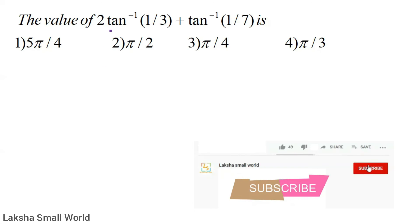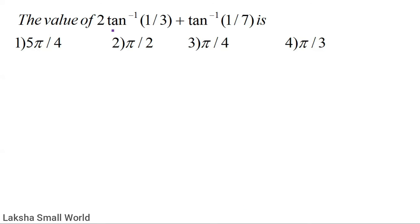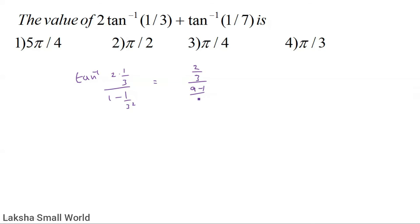Find the value of 2·tan⁻¹(1/3) + tan⁻¹(1/7). First solve 2·tan⁻¹(1/3) using the tan 2θ formula: tan⁻¹(2×(1/3) / (1 − (1/3)²)) = tan⁻¹((2/3) / (1 − 1/9)).